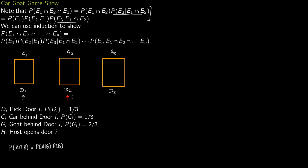On the other hand, if the contestant chooses door 2 and the car is behind door 1, the host does not have any option. He cannot open door 2 (contestant's choice) or door 1 (car is behind it). So the host has no choice but to open door 3. Similarly if the contestant chooses door 3 and the car is elsewhere, the host can only open door 2. The host does not have much choice if the contestant picks the wrong door.